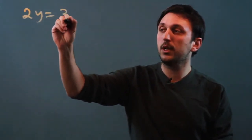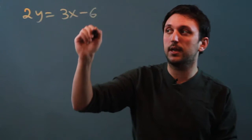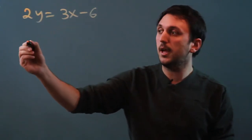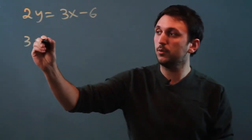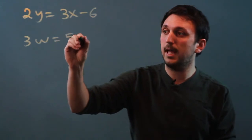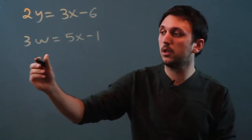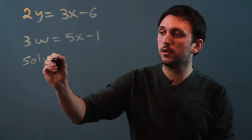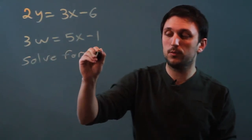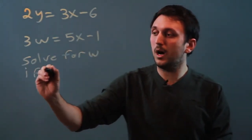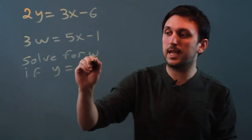If we say 2y equals 3x minus 6, that's one equation, and 3w equals 5x minus 1, and we want to solve for w if y equals negative 6.